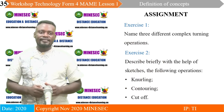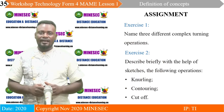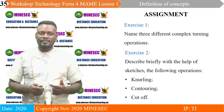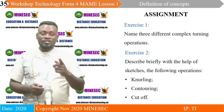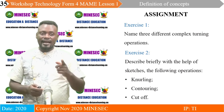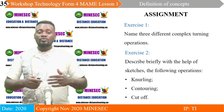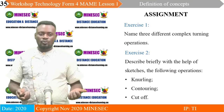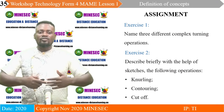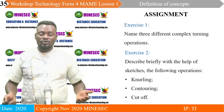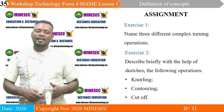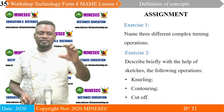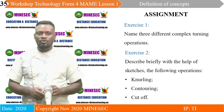The take-home assignment for today has two parts. The first is to name the different complex turning operations which you can easily identify. The second is to describe briefly with the help of sketches the following operations: what is a knurling operation, what is a contouring operation, and what is a cut-off operation? You should be able to give short notes about these different complex turning operations.